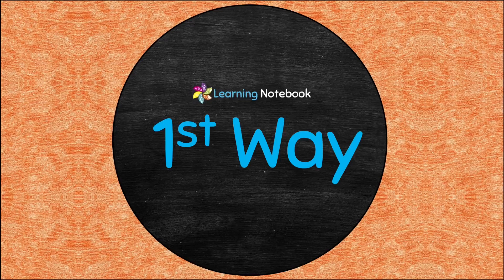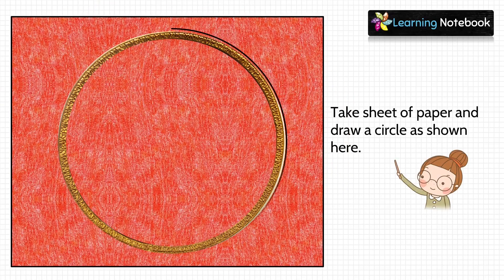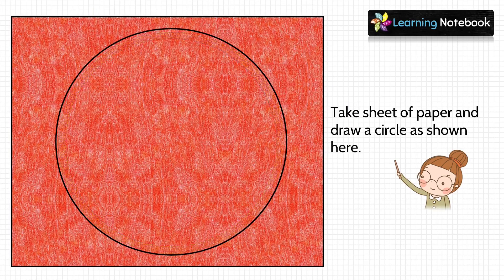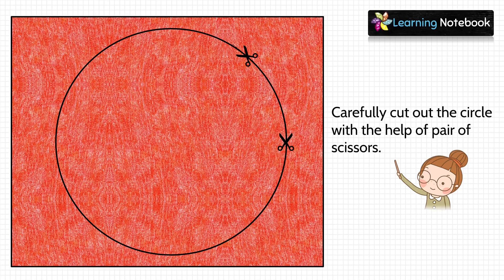Let's understand the first way to find the center of any given circle. Take a red sheet of paper and draw a circle on it using a bangle. Here we do not know the center of the circle. Now carefully cut out this circle using a pair of scissors.